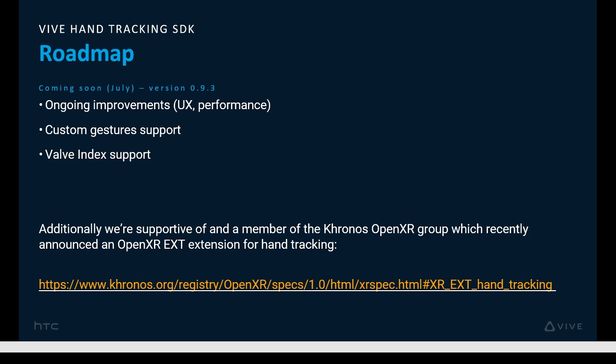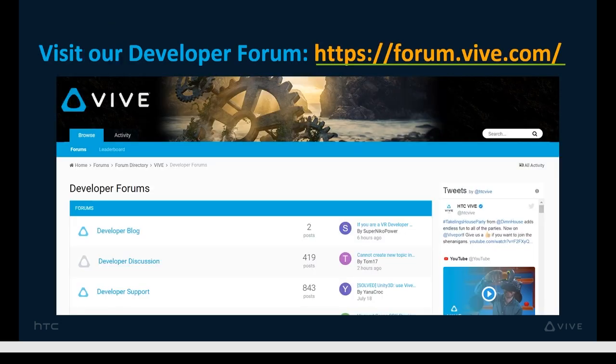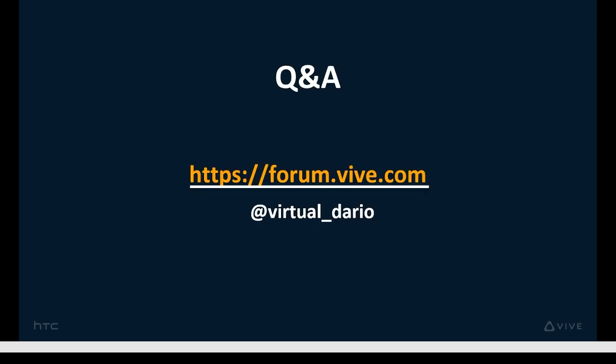Our next release is coming in July, and in addition to ongoing improvements in performance, features include custom gesture support and Valve Index support. Additionally, we're a member of the Khronos OpenXR group, which recently announced an OpenXR extension for hand tracking. Please give it a try and give us your feedback. Here are the direct links, but you should be able to easily navigate from developer.vive.com. I'll also be posting additional code on GitHub — simply search for Vive or Vive Software on GitHub. We have a dedicated forum for hand tracking, frequented by our hand tracking engineers, so if you have a question, post it there or feel free to reach out to me directly.